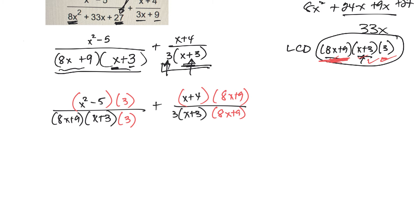Okay, so now I have a common denominator. So I can rewrite this expression with my common denominator, 8x plus 9, x plus 3, and the 3. Maybe I should put the 3 at the front. That's where we usually put it. And since it's multiply, that would be the commutative law.